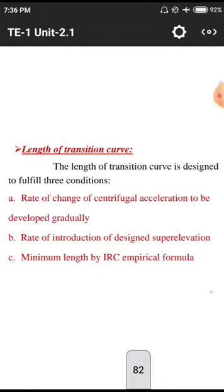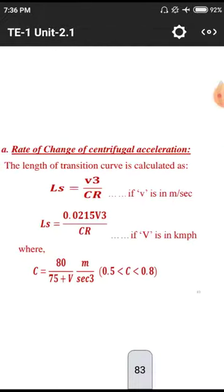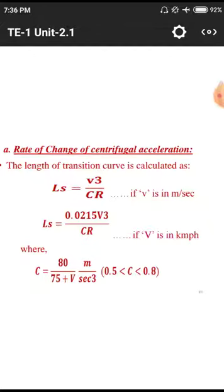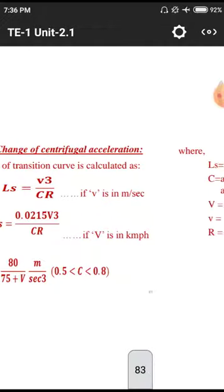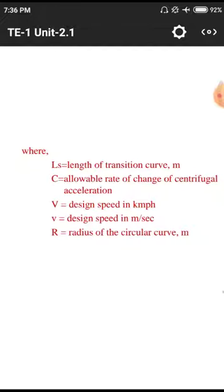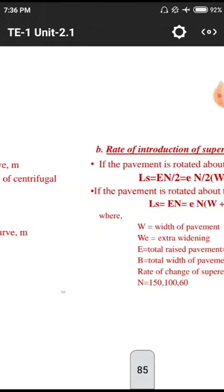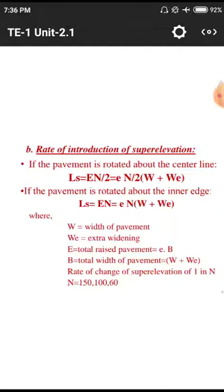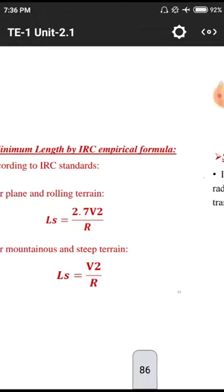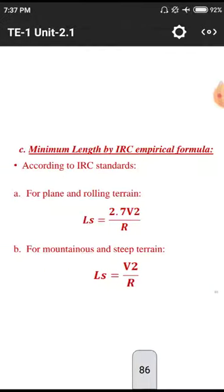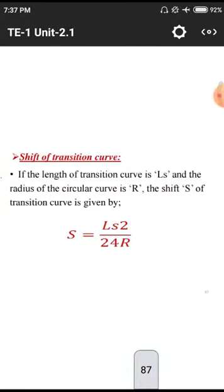These are the different terms used in the transition length curve. The formula is V³ divided by C·R, where V is velocity, C is the centrifugal force coefficient, and R is the radius of the curve. C equals 80 divided by (75 + V), which is an empirical formula given by the Indian Road Congress. Super elevation is given by Ls = e·n/2, and there is also a formula for extra widening and normal widening given by IRC.